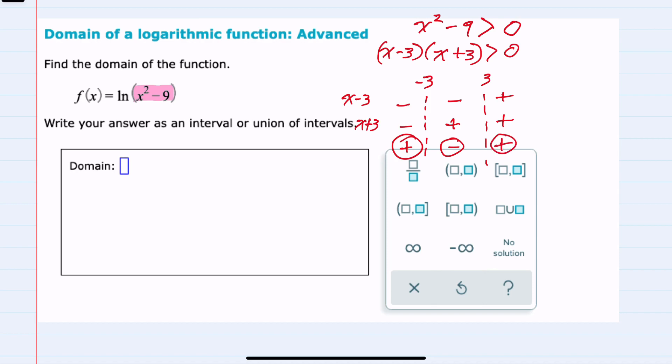We're looking for where this x squared minus 9 is greater than 0, so we're looking for where it is positive. So negative infinity to negative 3, and for values greater than positive 3, so 3 to positive infinity.